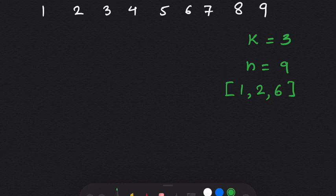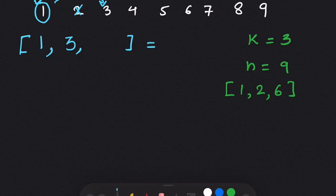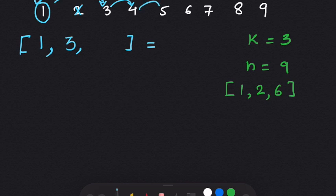Now let's search for other possibilities. We start with an empty array, add 1, then skip 2 and add 3 instead. The sum is 4. After 3, we add 4 — sum becomes 8, not correct. We go back, remove 4, add 5 — the sum becomes 9. So another possibility is 1, 3, 5.